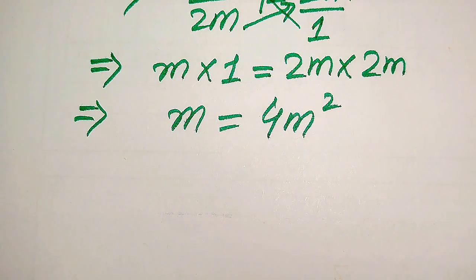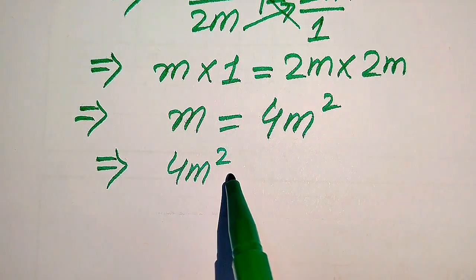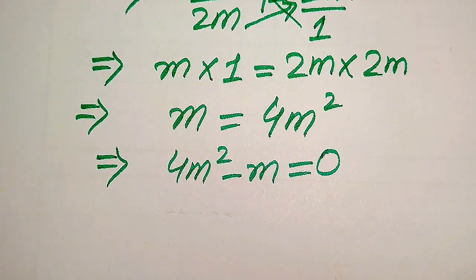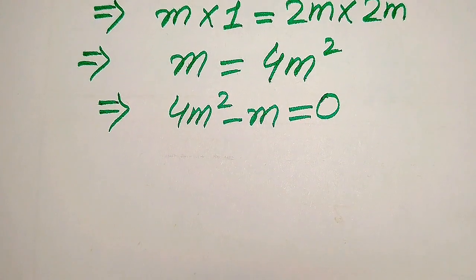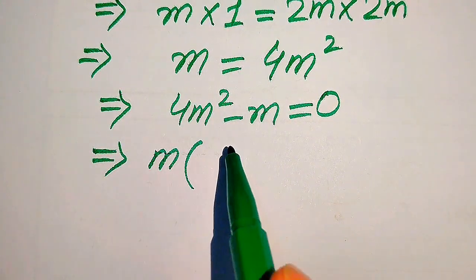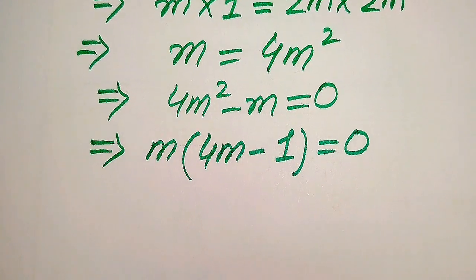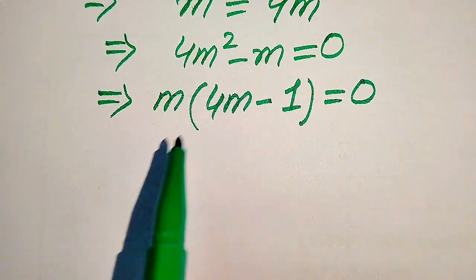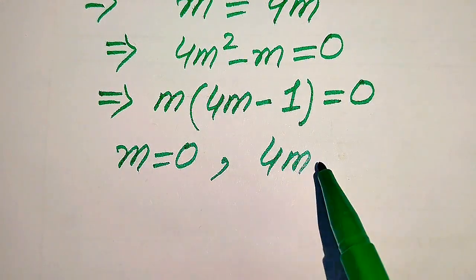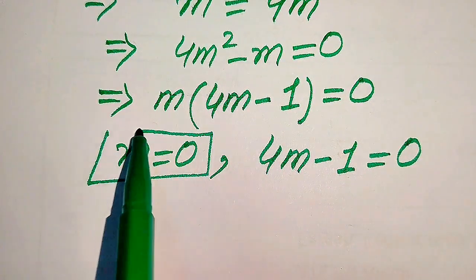In the next step we move this m to the right hand side, giving us 4m squared minus m equals 0. Both terms involve m, so we take m as a common factor. After factoring we get m times (4m minus 1) equals 0. We split this into two cases: the first case is m equals 0, and the second case is 4m minus 1 equals 0.